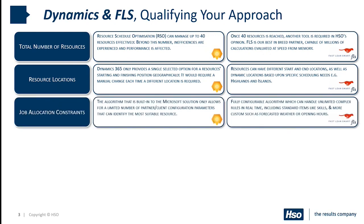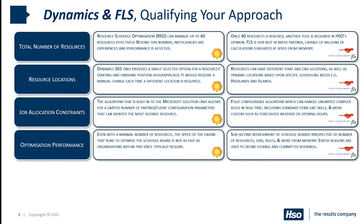The next area is the constraints around job allocation — all of the different parameters you want to evaluate when identifying the most suitable resource. From a Microsoft perspective there is some capability around skill sets, availability, and historical route planning with traffic disruption. But FLS really comes into its own with a wide range of options including forecasted weather, customer opening hours, and many other elements that can be fed into the engine to give much more control and certainty over scheduling efficiency.